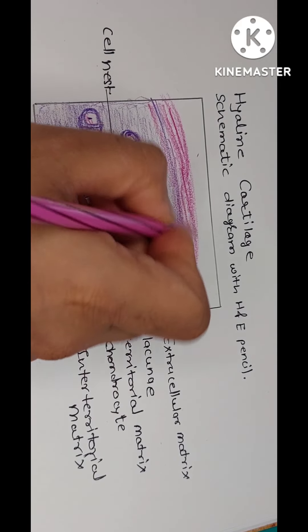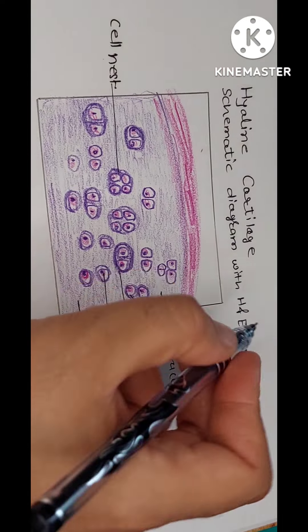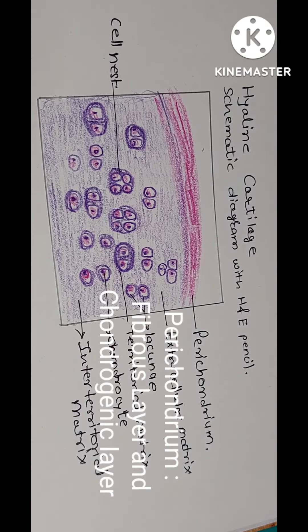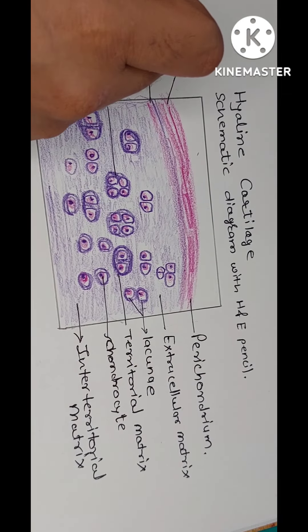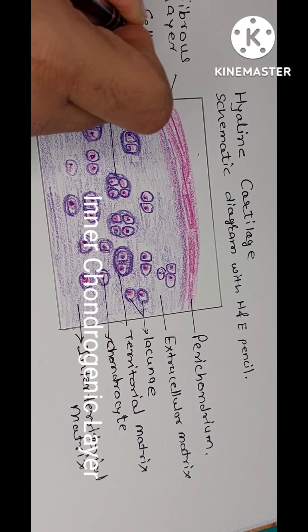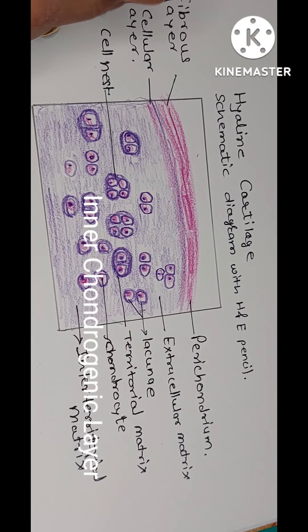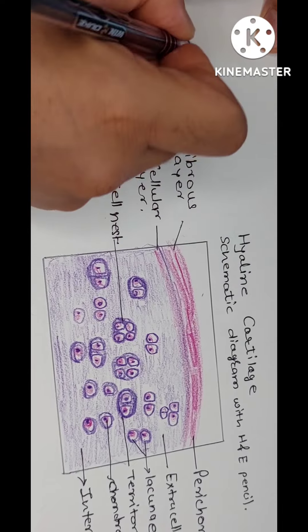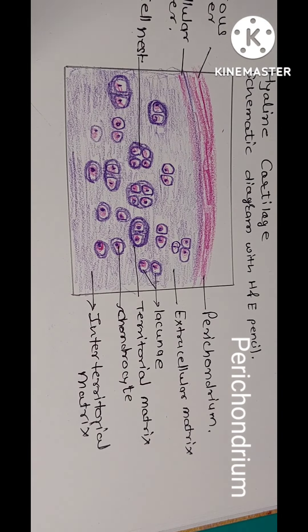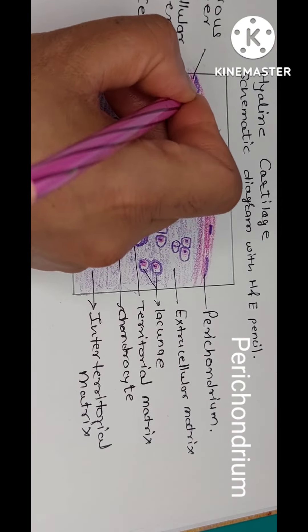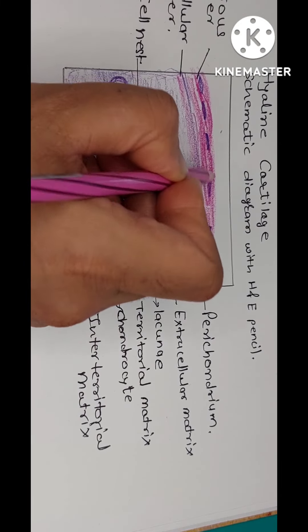Here, this is the perichondrium — 'peri' meaning around the cartilage. This perichondrium shows two layers: one is the fibrous layer of perichondrium, and below this is the cellular layer, also known as the chondrogenic layer. The fibrous layer of perichondrium contains fibroblast-like cells as well as type 1 collagen fibers — it is a dense irregular connective tissue.